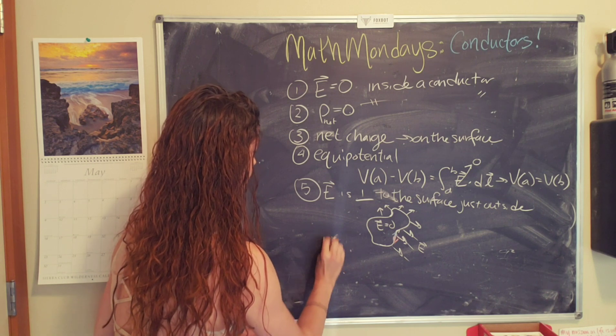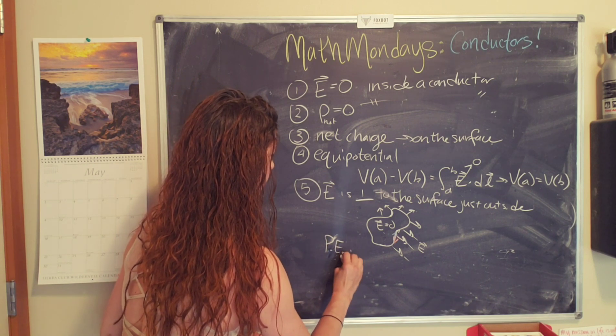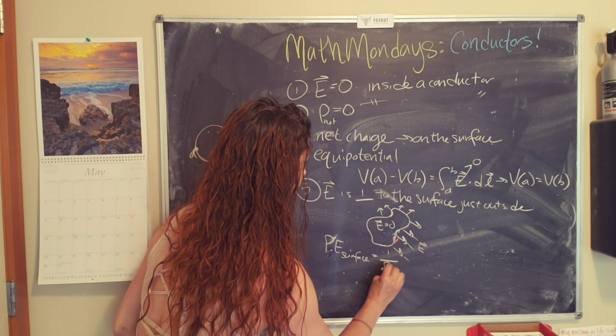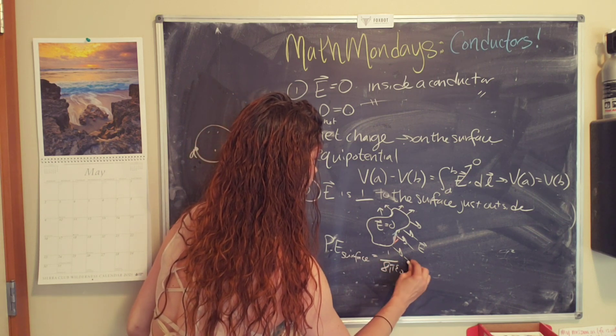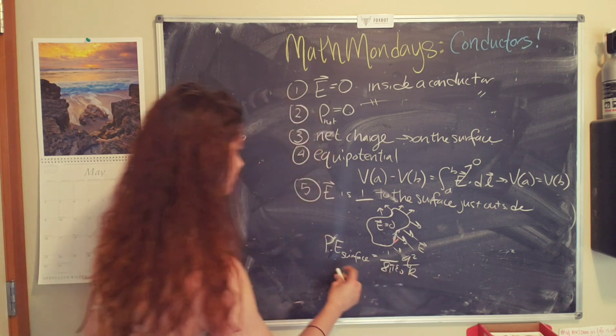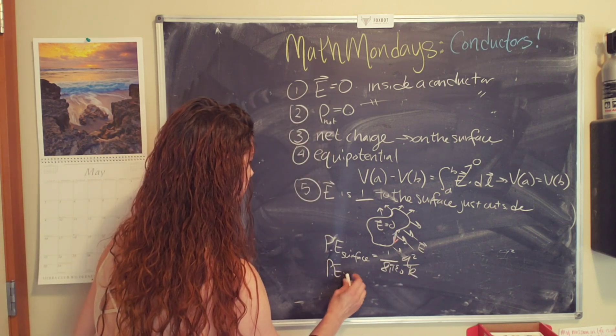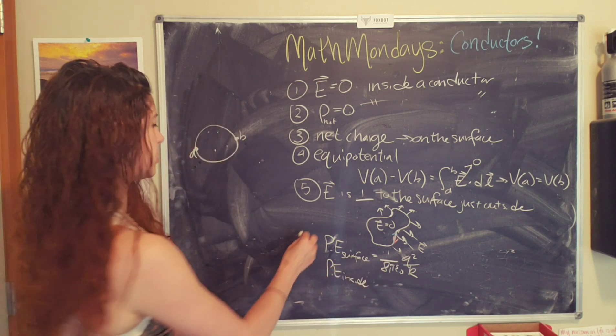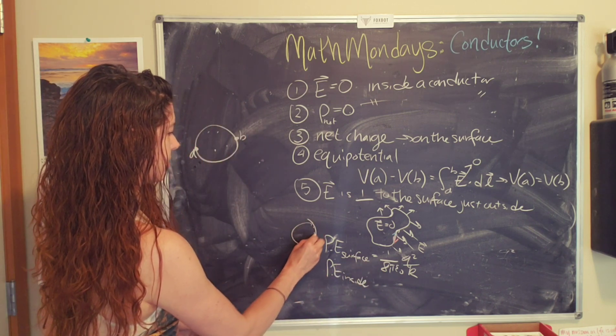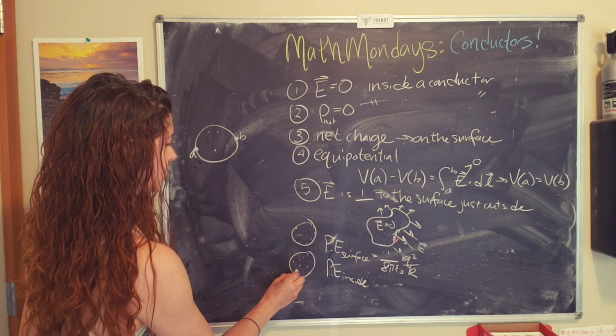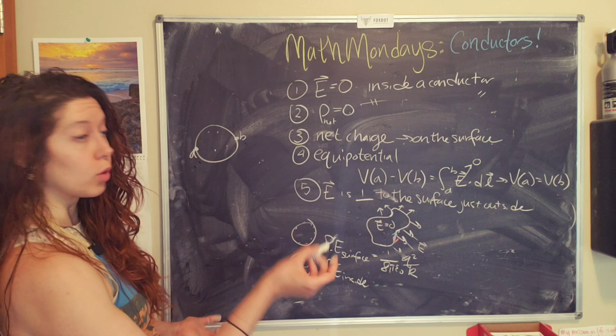The potential energy on the surface is 1 over 8 pi epsilon naught, q squared over r. And the potential energy, if inside, if all of the, so this is if all the charge is on the outside and, this is if charge is spread out evenly throughout the whole surface. So some of it's going to be on the outside, but most of it's going to be on the inside.